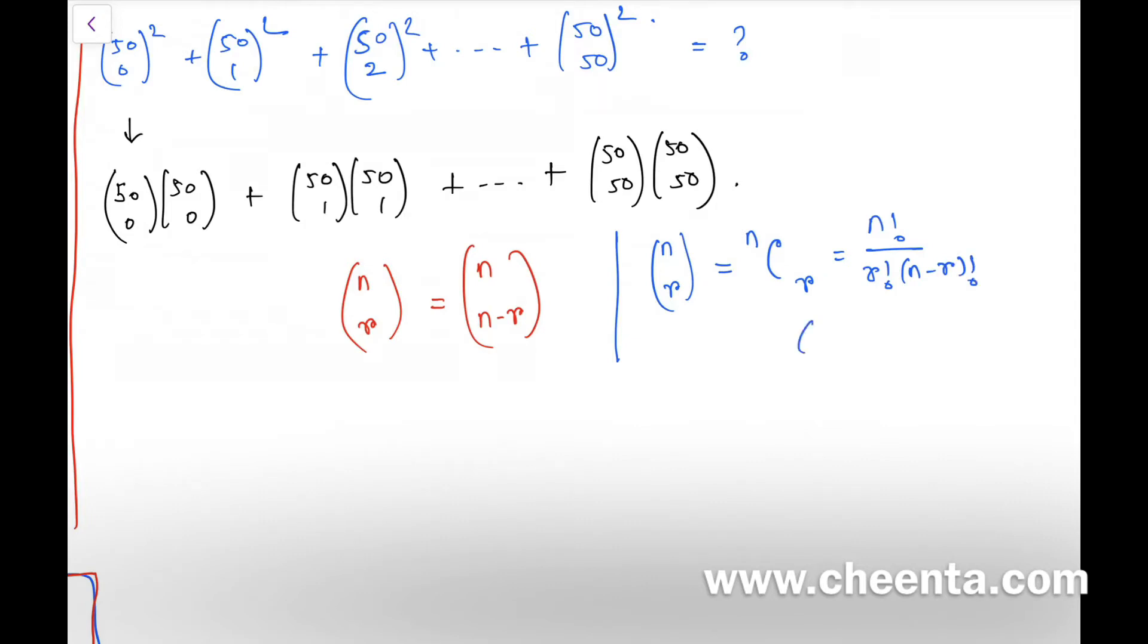And it is the number of ways of selecting r things from n distinct things.